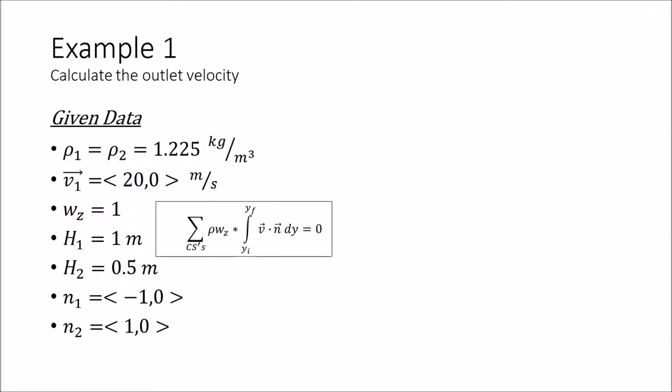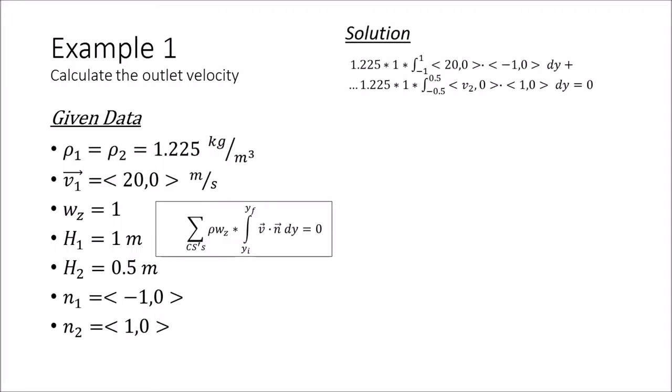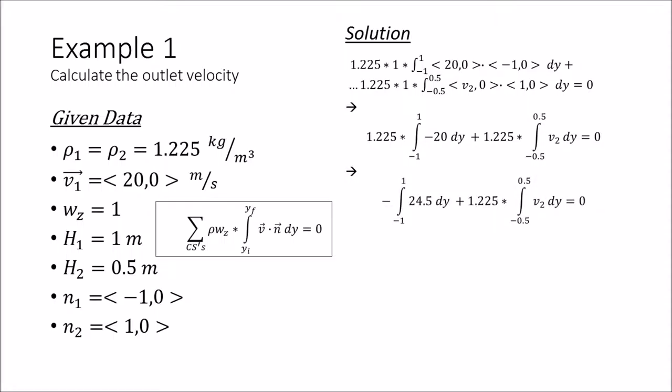In this first example we will be solving for the V2 outlet velocity using the given data. You will need to use the continuity equation and assume that the outlet velocity will have no Y component. Using the continuity equation for the inlet and the outlet, we can simplify the integrals into algebraic form and solve for V2. This gives us a velocity of 40 meters per second. Remember that it is a vector quantity in the X direction only.